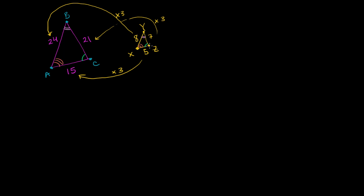If they were the same scale, they would be the exact same triangles. But one is just a bigger, blown-up version of the other — or this is a miniaturized version of that one. If you just multiply all the sides by 3, you get to this triangle. So we can't call them congruent, but this does seem to be a special relationship — we call this special relationship similarity.